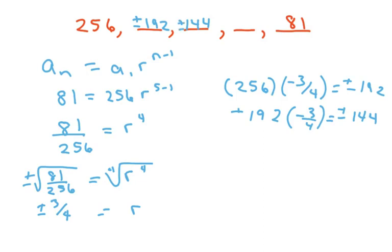You can write this out if you want. The next one is going to be 144 times negative 3 fourths, which is actually plus or minus. And that's going to give you plus or minus 108. And there's your three geometric means.